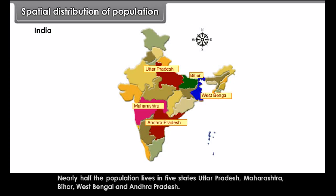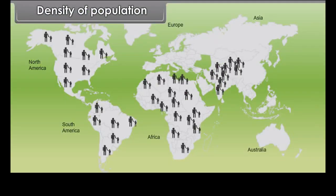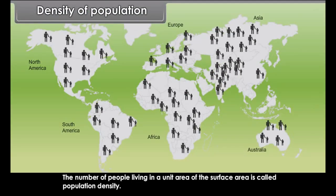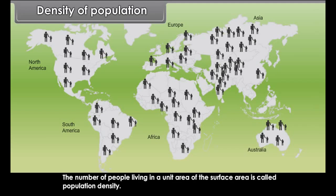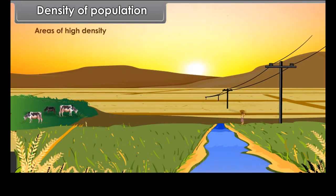India is the second largest populated country in the world after China. Nearly half the population lives in 5 states: Uttar Pradesh, Maharashtra, Bihar, West Bengal and Andhra Pradesh. The other half lives in 23 states and 7 union territories. About one-sixth of the population resides in Uttar Pradesh alone.